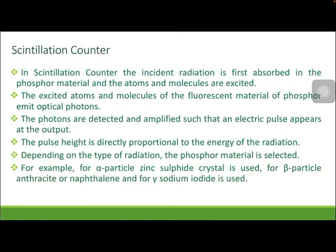The principle of the scintillation counter is: the incident radiation is first absorbed in the phosphor material and the atoms and molecules are excited. The excited atoms and molecules of the fluorescent material of the phosphor emit optical photons, which are light flashes. These light flashes are called scintillations, and therefore it is named the scintillation counter. The photons are detected and amplified such that an electric pulse appears at the output. The pulse height is directly proportional to the energy of the radiation.